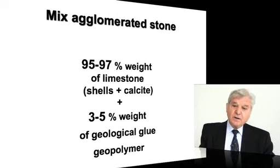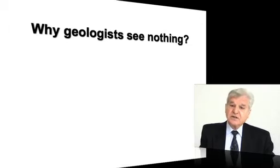This explains why geologists see nothing. You will find in the literature dealing with contradictions of my theory, and in several papers written on the internet, the claim that it is very easy to look at a stone and detect whether it is natural or artificial. That is wrong. This is not the case for geopolymeric limestone, and it is not the case for the Egyptian limestone blocks making up the pyramids.